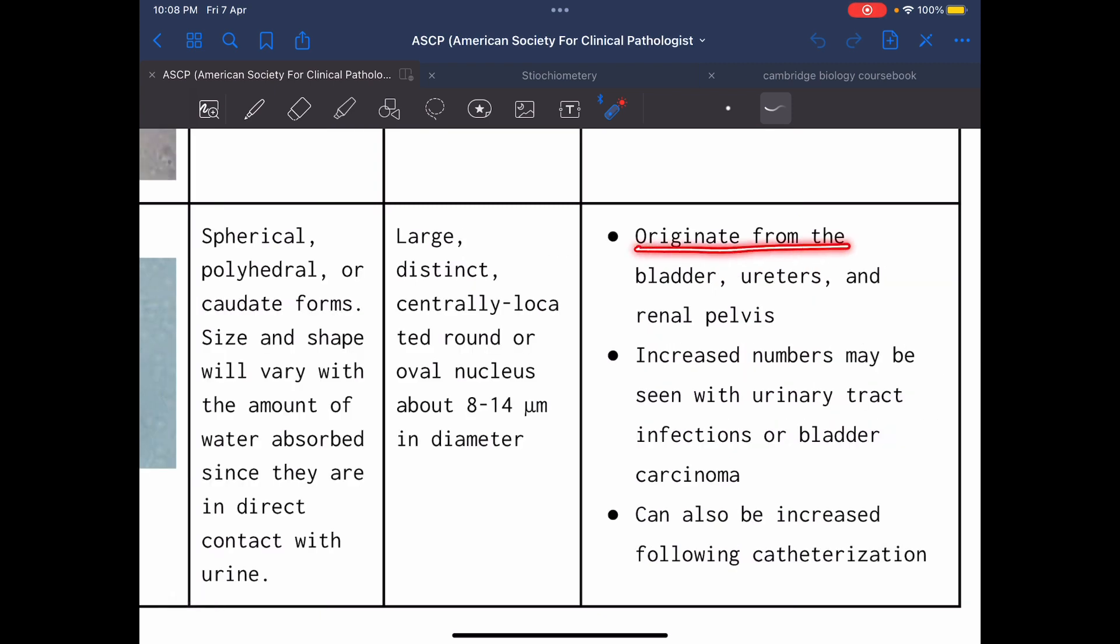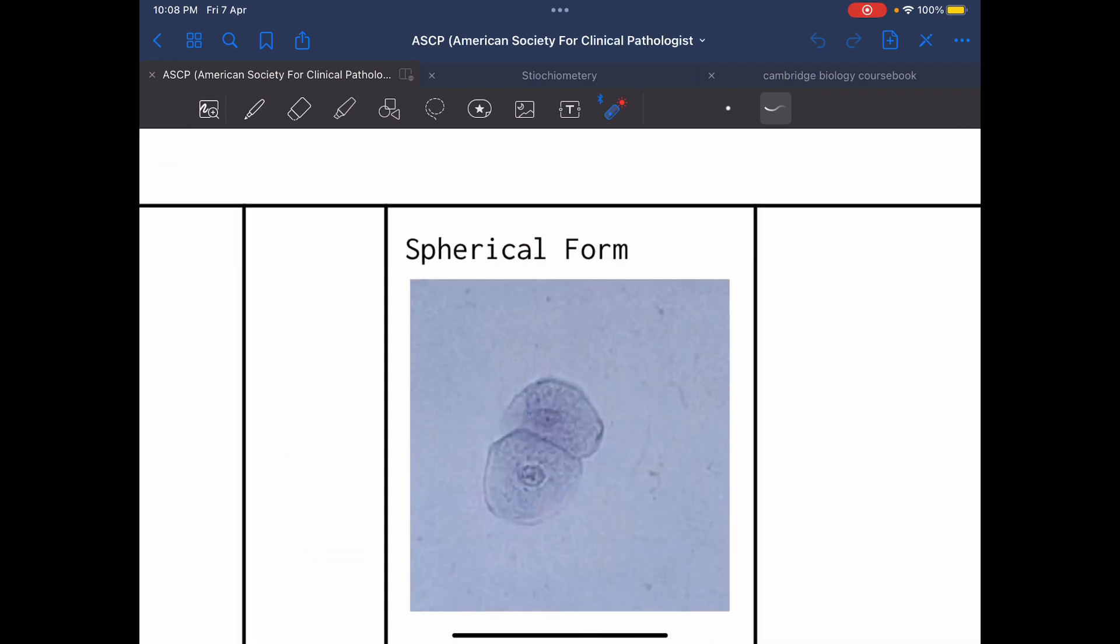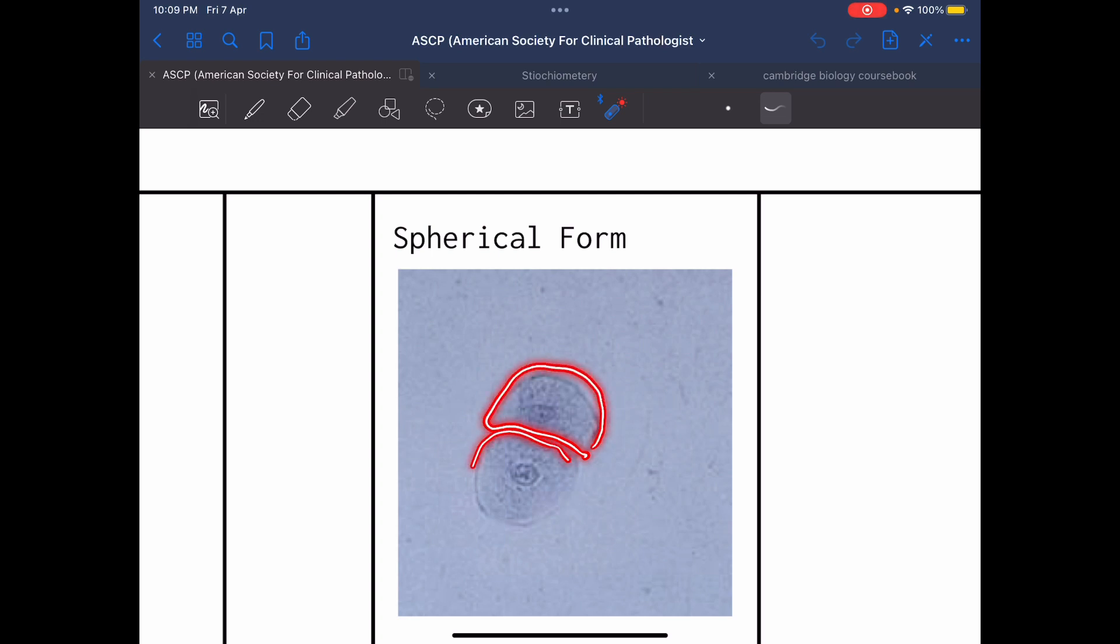These transitional cells originate from bladder, ureters, and renal pelvis. The increased number may be seen in urinary tract infection or bladder carcinoma. Also, it is increased following catheterization or examination of the lower urinary tract. The other form is spherical form. This is the transitional epithelial cell in spherical form.